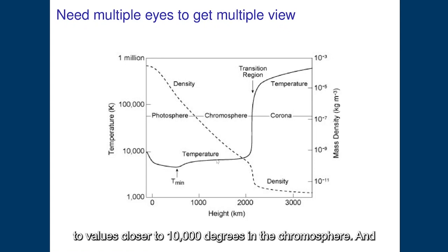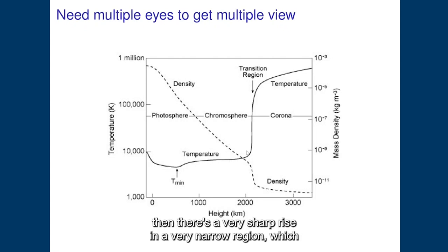To values closer to 10,000 degrees in the chromosphere, and then there is a very sharp rise in a very narrow region which is called the transition region where the temperature increases very sharply and then reaches values of about 1 million degrees in the corona.